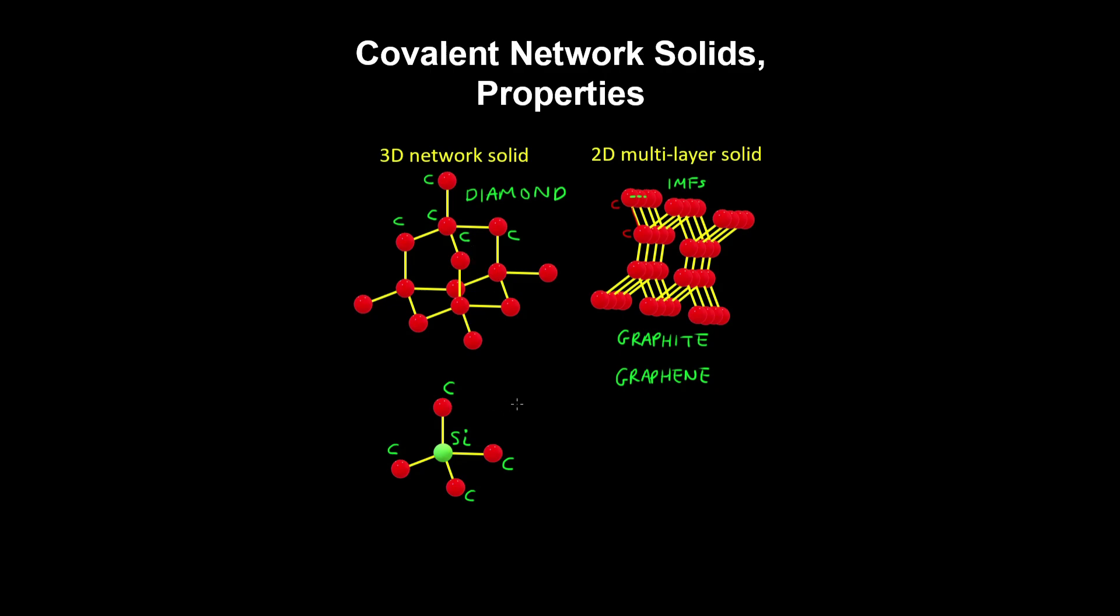So typically covalent network solids contain carbon or silicon, because these have four valence electrons and can form a lot of covalent bonds.